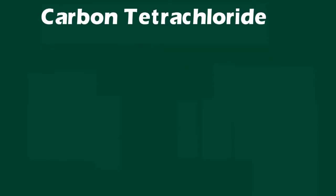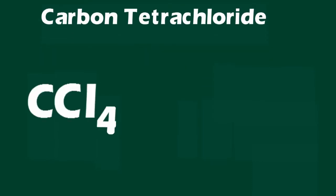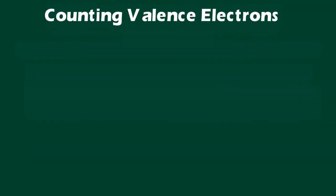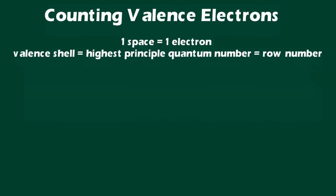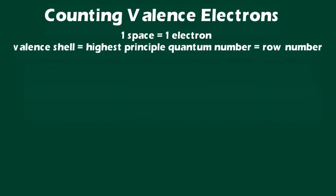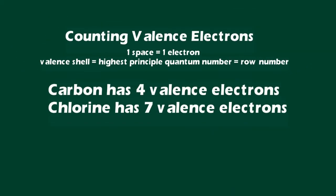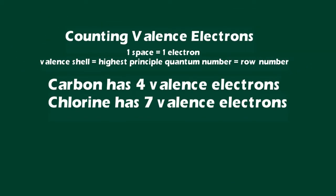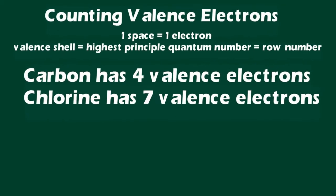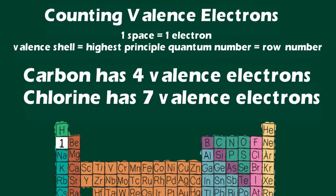The first step in drawing Lewis structures is to determine the total number of valence electrons available for the molecule. This is done by summing the valence electrons for all atoms in the molecule. To determine valence electrons for an atom, it is convenient to use the periodic table. Count the number of spaces in the row containing the atom from left to right until you reach your atom. Each space counts as one electron.